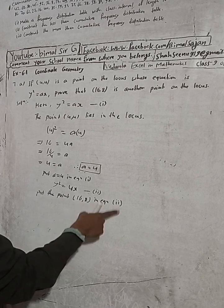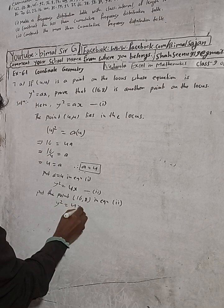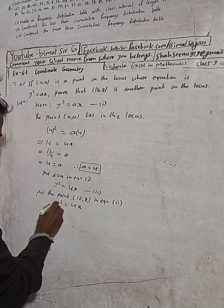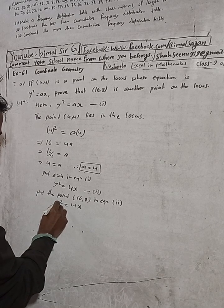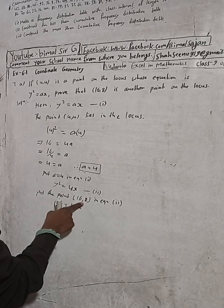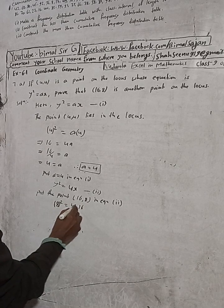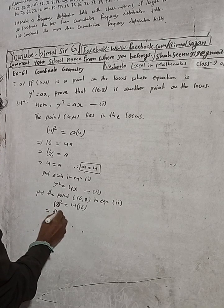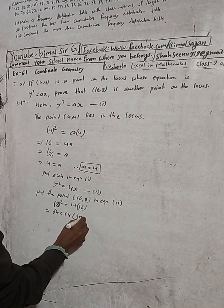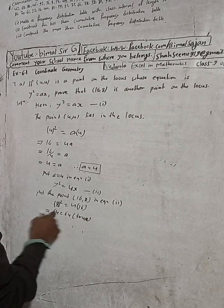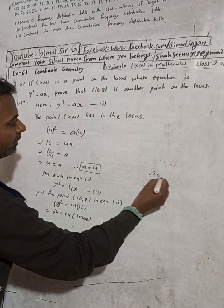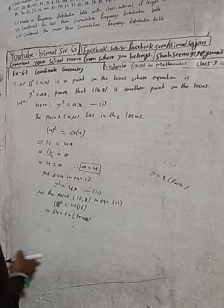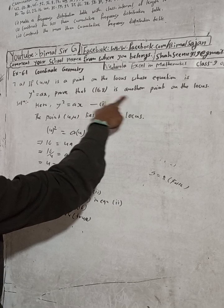So y² = 4x: in place of y put 8, and in place of x put 16. This gives 8² = 4 × 16, which is 64 = 64. This is true! Because 64 equals 64. If the two sides were not equal, it would not be true — but it is true, which means the point (16, 8) satisfies the equation.